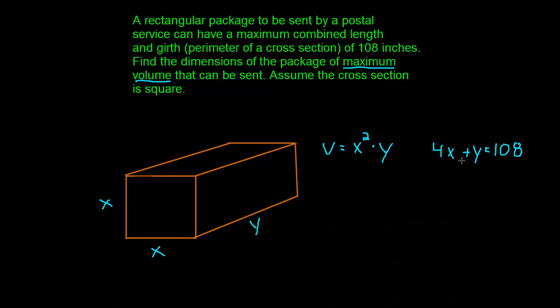The girth is simply the perimeter around the box, 4x, plus the length of the box. We want that to equal 108. Now it could be less, but we're interested in maximizing the volume. So if we don't take the post office up on the full 108 inches, we're kind of ripping our own selves off. If I solve this for y, then I get y = 108 - 4x. Now I can make a substitution into my primary function. That gives me V = x²(108 - 4x).